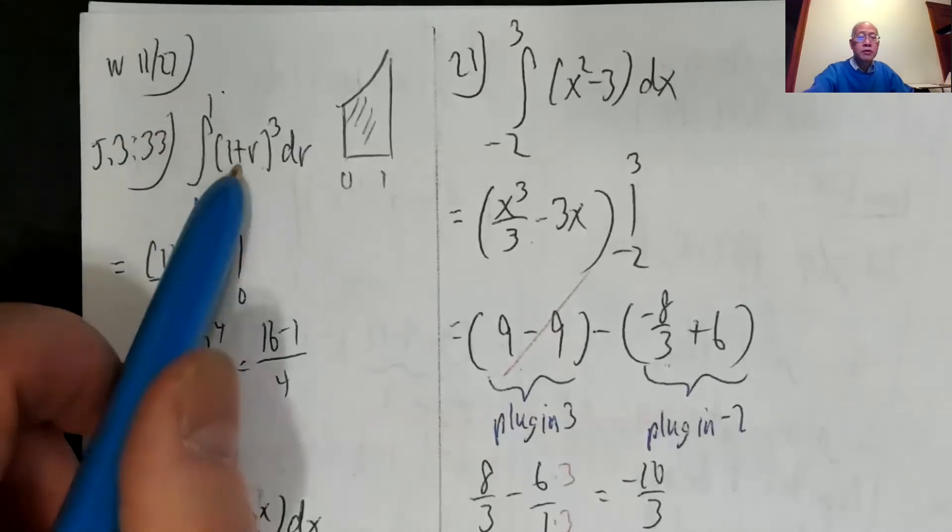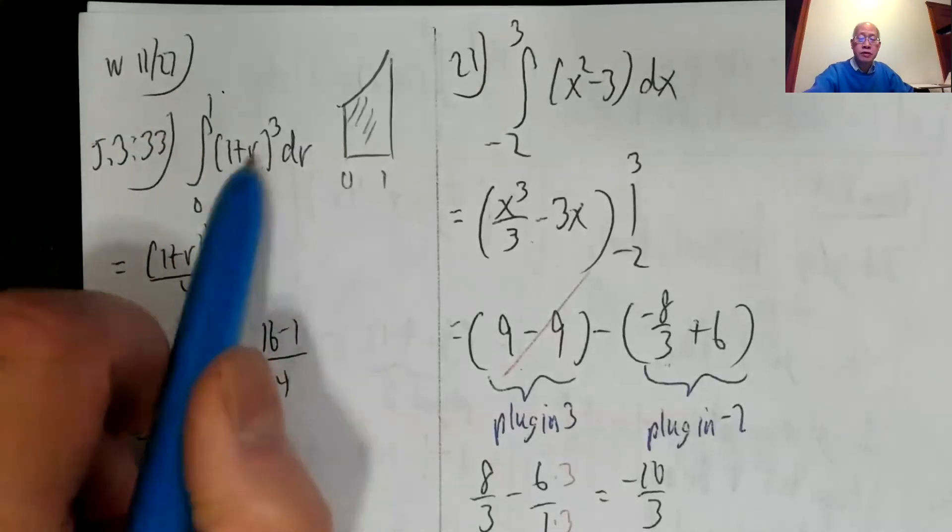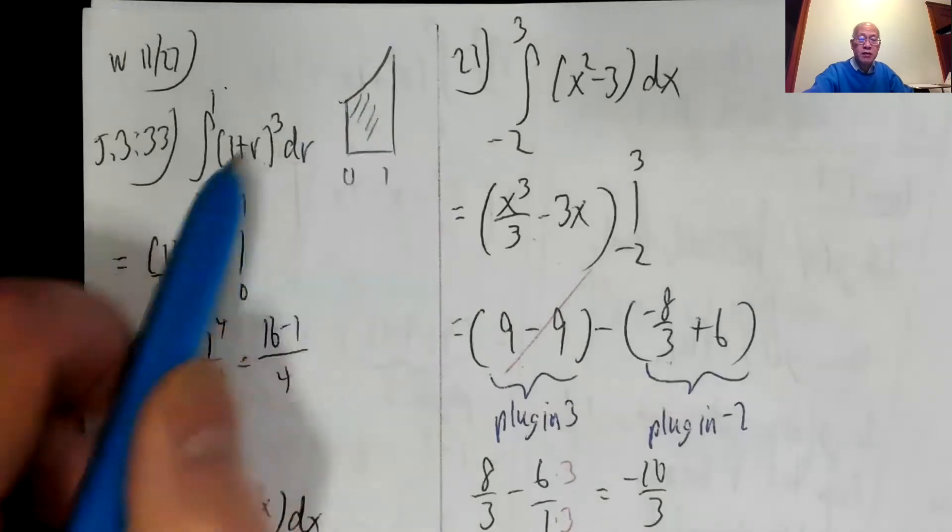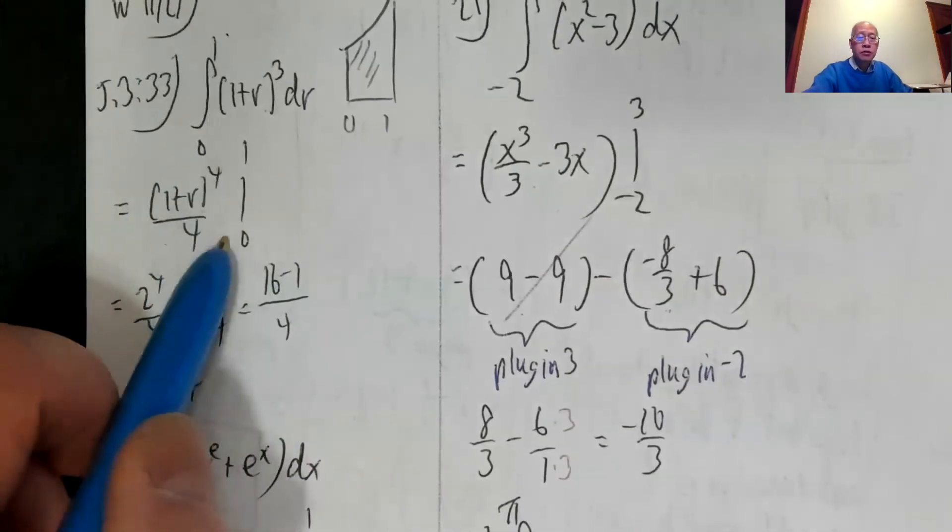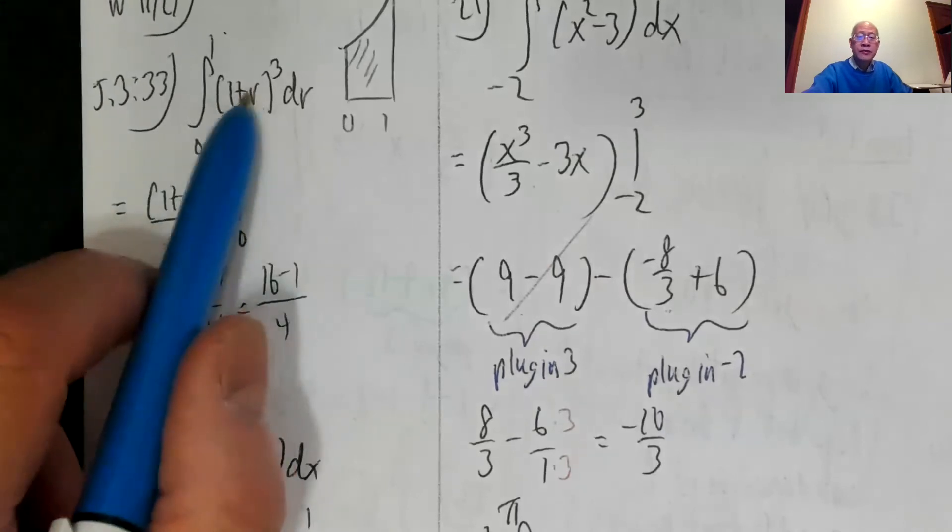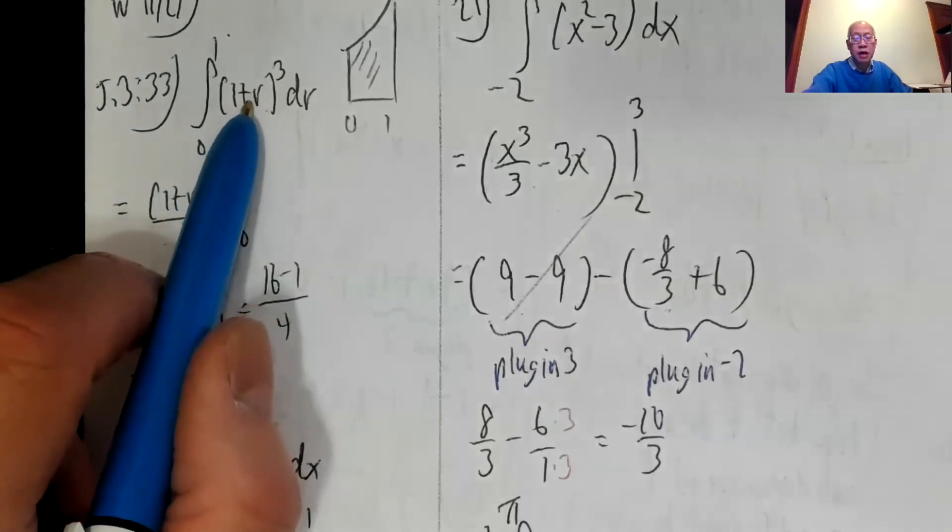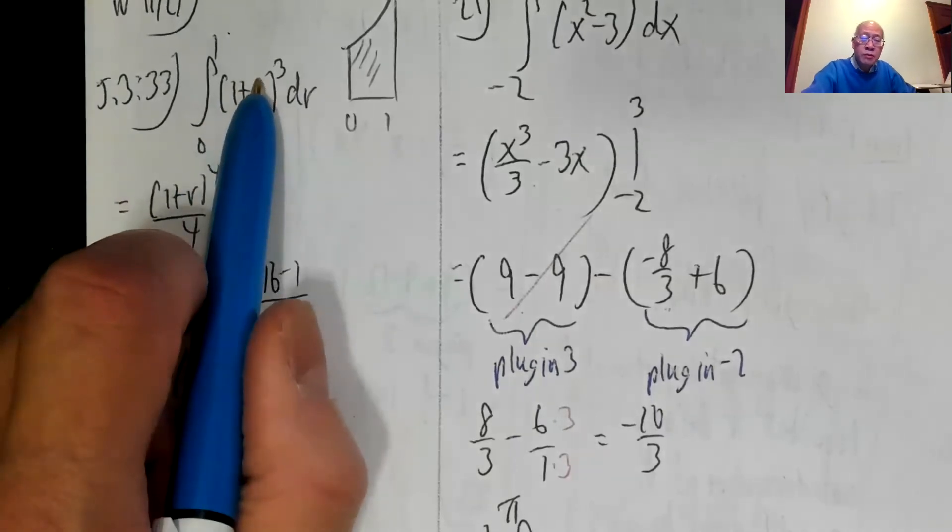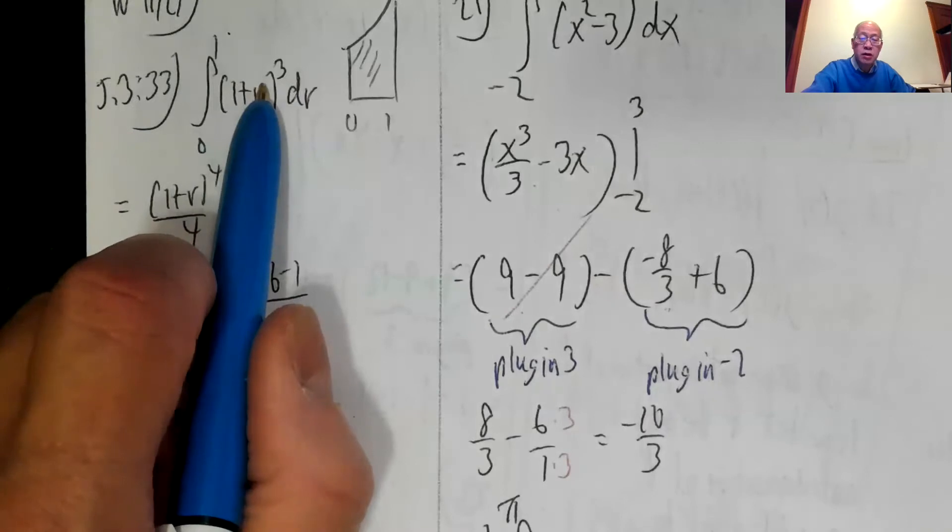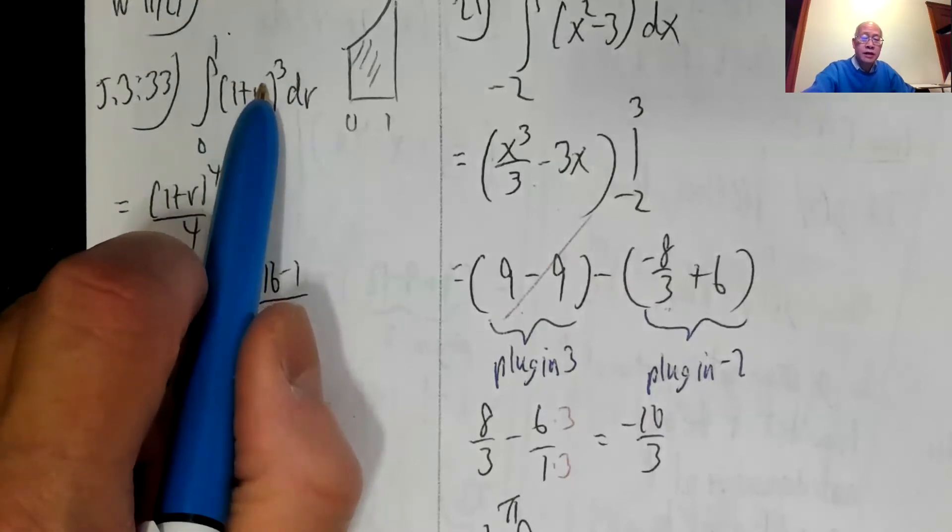Integral from zero to one of one plus r cubed dr. The letters don't really matter. So I'm finding this area here. So one plus r to the fourth over four from zero to one. Even though there's a complicated expression, well, not too complicated, I can still do the power rule if the derivative of the inside is one. Now, if this had been one plus r squared, that'd be a different story altogether. We'll tackle that in the next section.